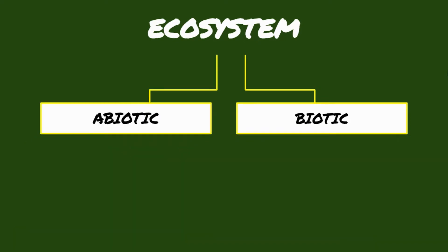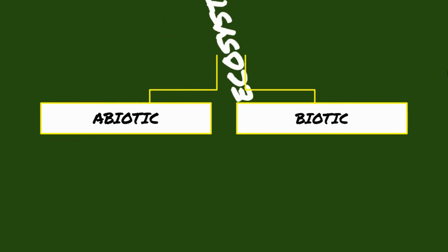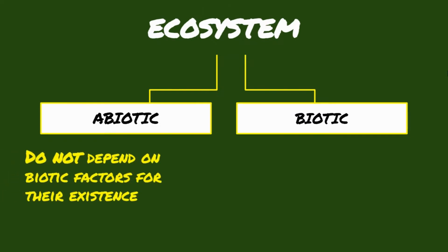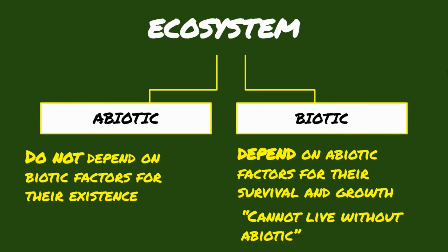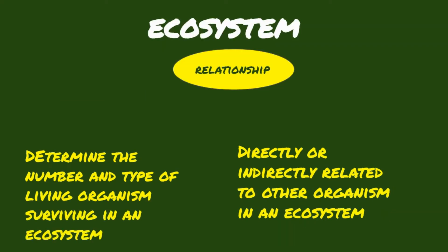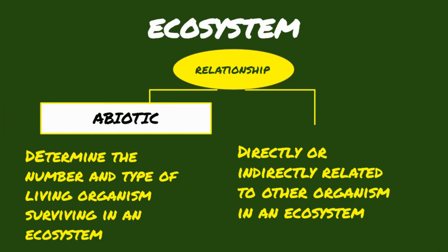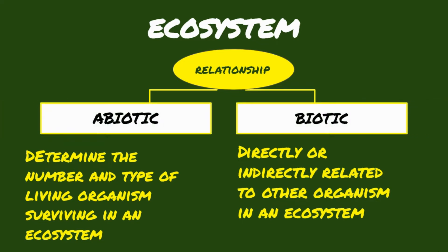Now let's differentiate both abiotic and biotic components in an ecosystem. Abiotic components do not depend on biotic factors for their existence. With or without the biotic components, there will still be abiotic components in the ecosystem. On the other hand, biotic components depend on abiotic factors for their survival and growth, meaning biotic components cannot live without the abiotic factors. In terms of relationship, abiotic factors determine the number and type of living organisms surviving in an ecosystem. On the other hand, living organisms might be directly or indirectly related to other organisms in an ecosystem.